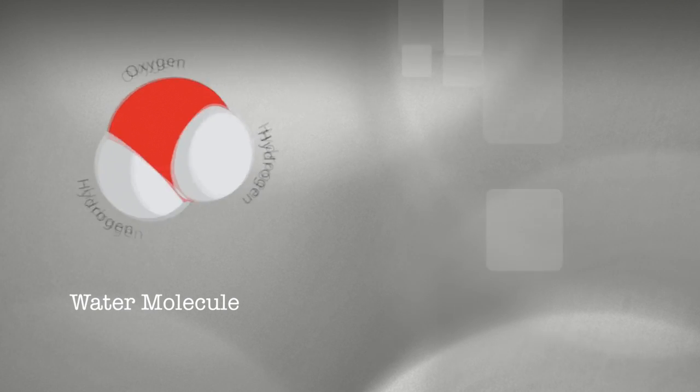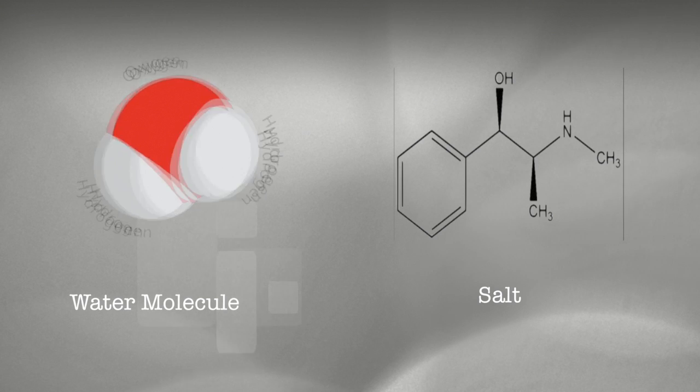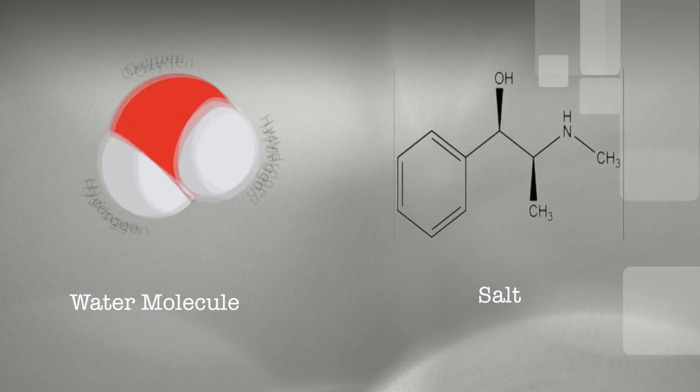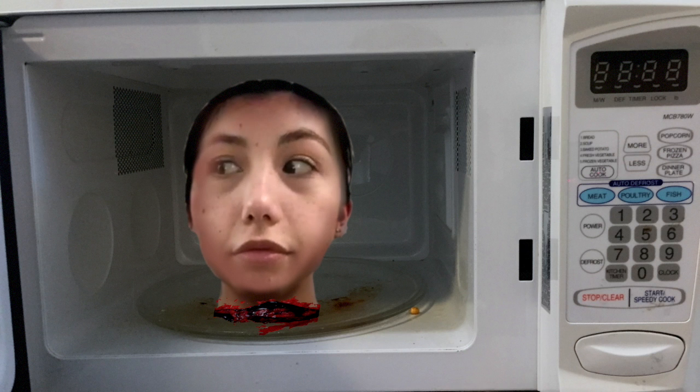Because not all the molecules in the food are water, due to the presence of other chemicals like salt, heat forms in pockets of the food sooner than others, which is why the food may become unevenly heated.